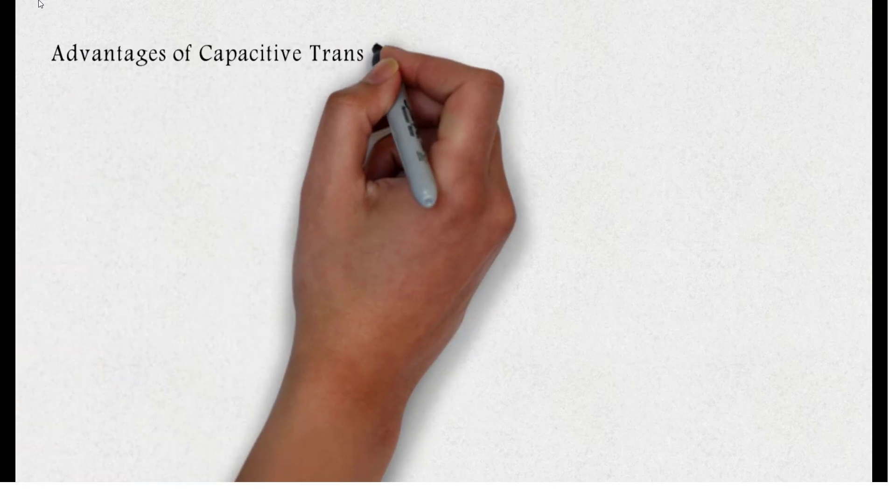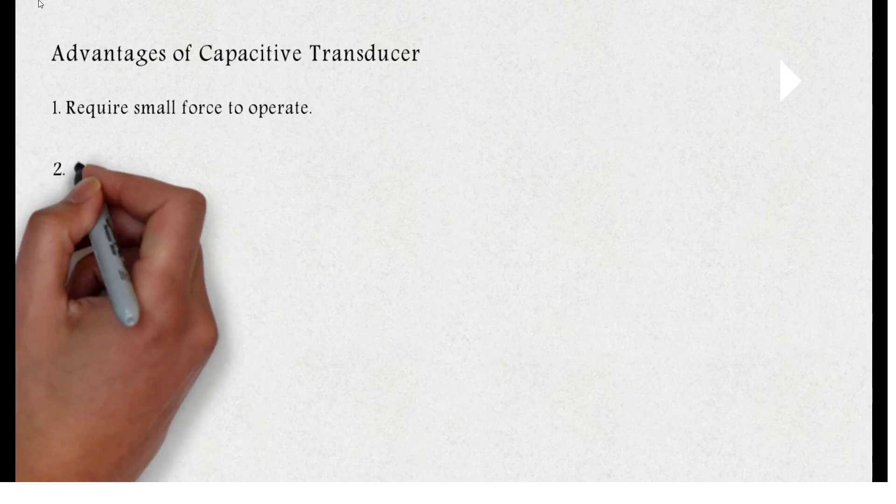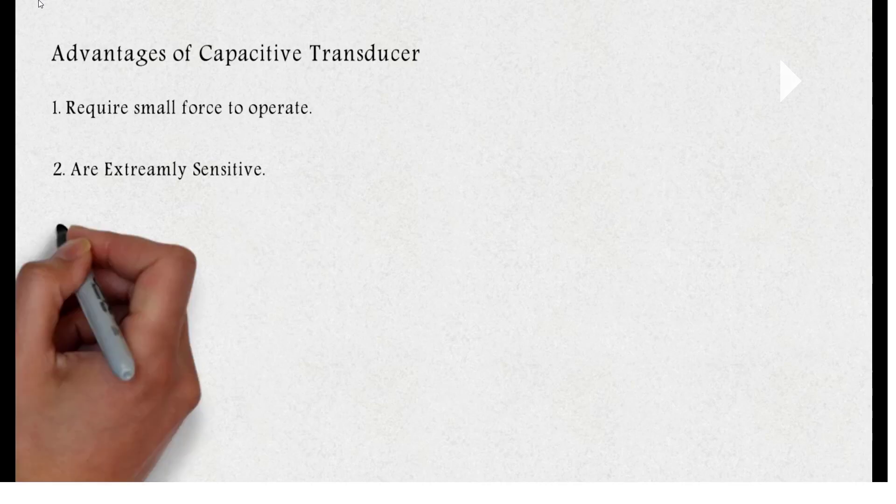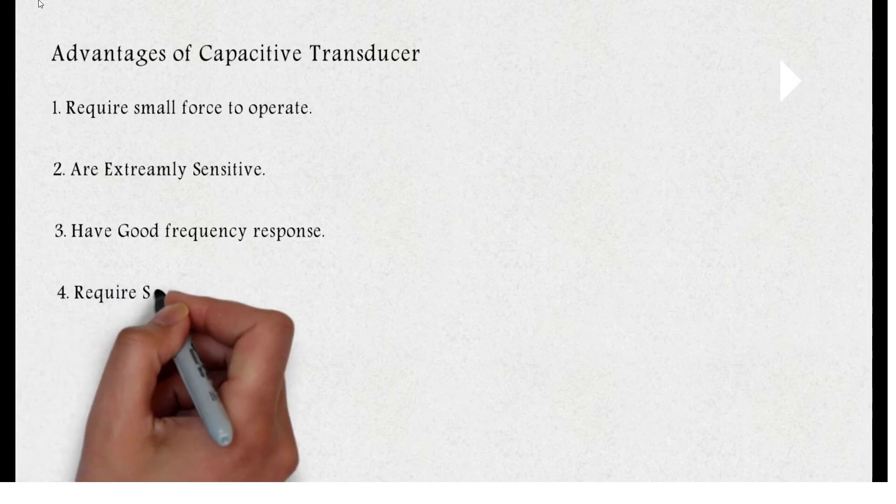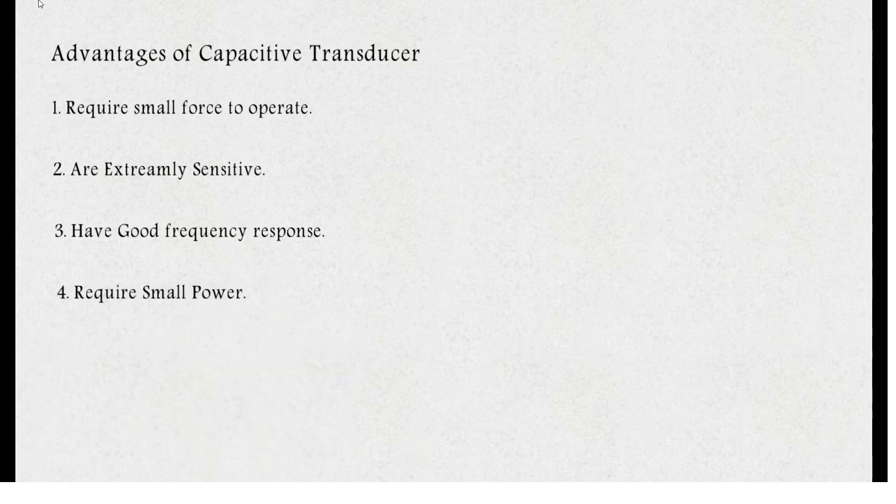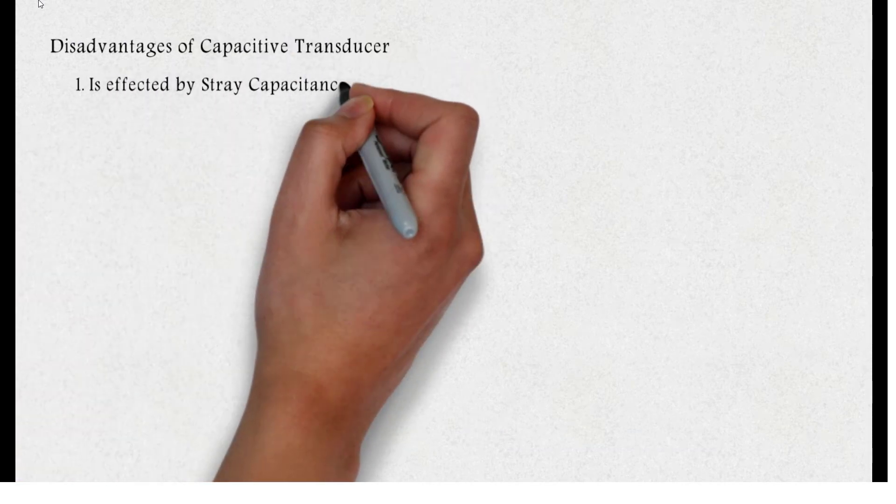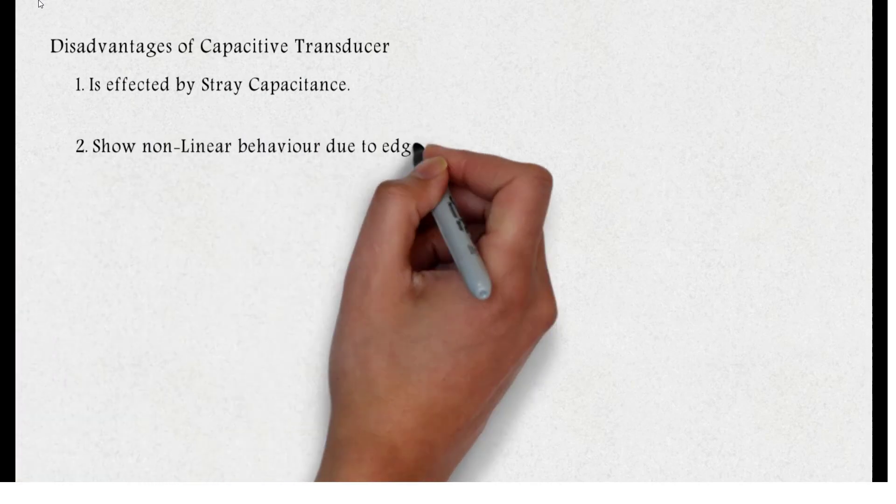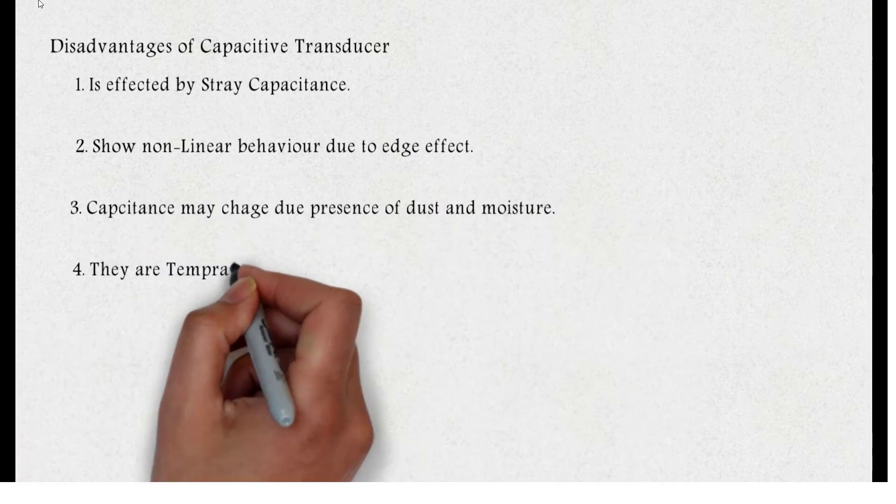The advantages of a capacitive transducer are: they require small force to operate hence are suitable for small systems, these are extremely sensitive, they have a good frequency response as high as 50 kilohertz, and since they are small they require small power to operate. Disadvantages of a capacitive transducer are: it is affected by stray capacitance, shows non-linear behavior due to edge effect, capacitance may change due to presence of dust and moisture, and temperature sensitive.